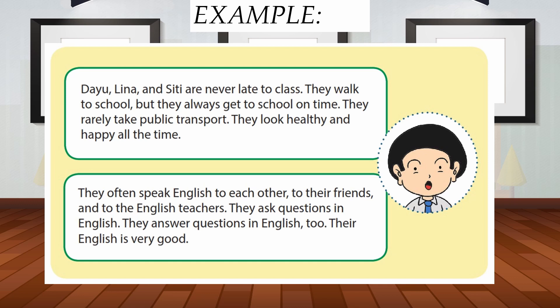Here is an example of simple present tense in a paragraph: 'Dayu, Lena, and Siti are never late to class. They walk to school but they always get to school on time. They rarely take public transport. They look healthy and happy all the time. They often speak English to each other, to their friends, and to the English teacher. They ask questions in English and they answer questions in English too. Their English is very good.'